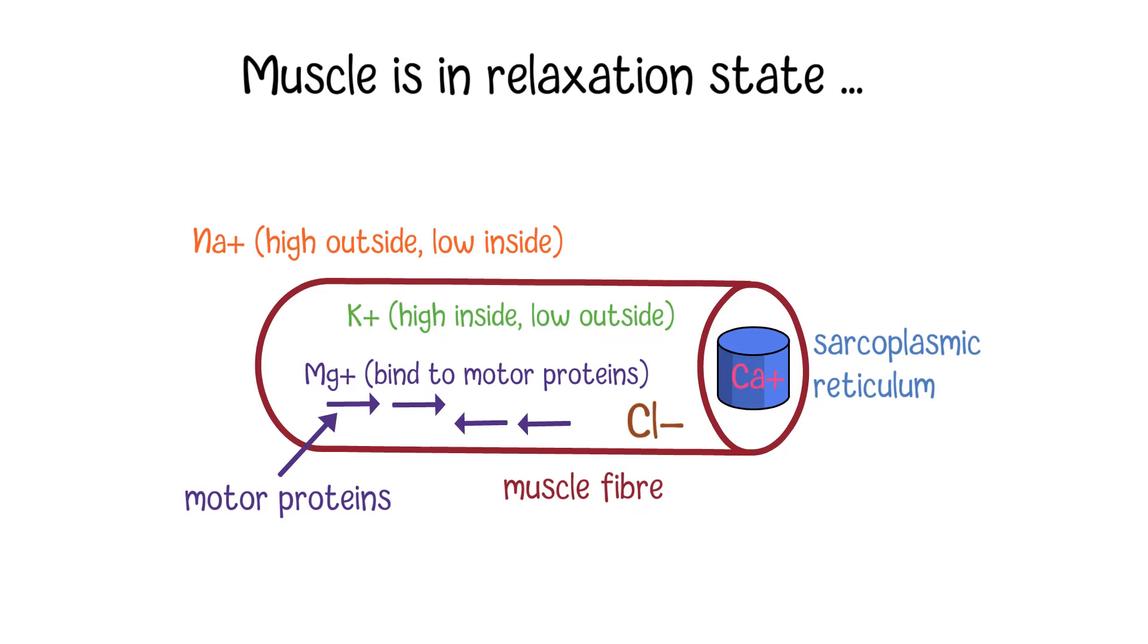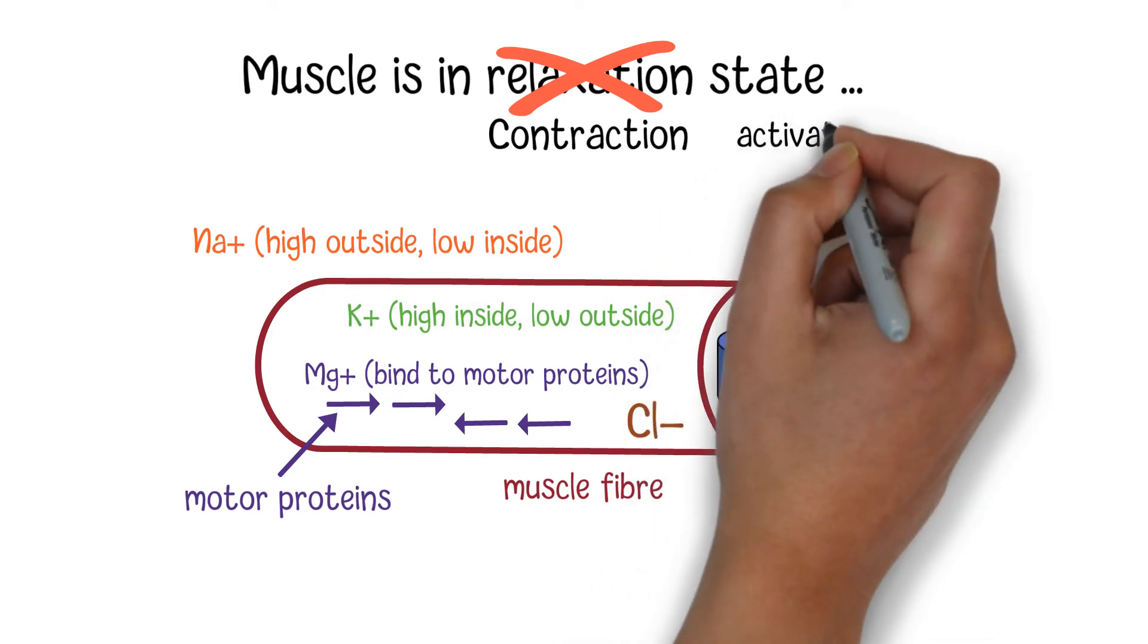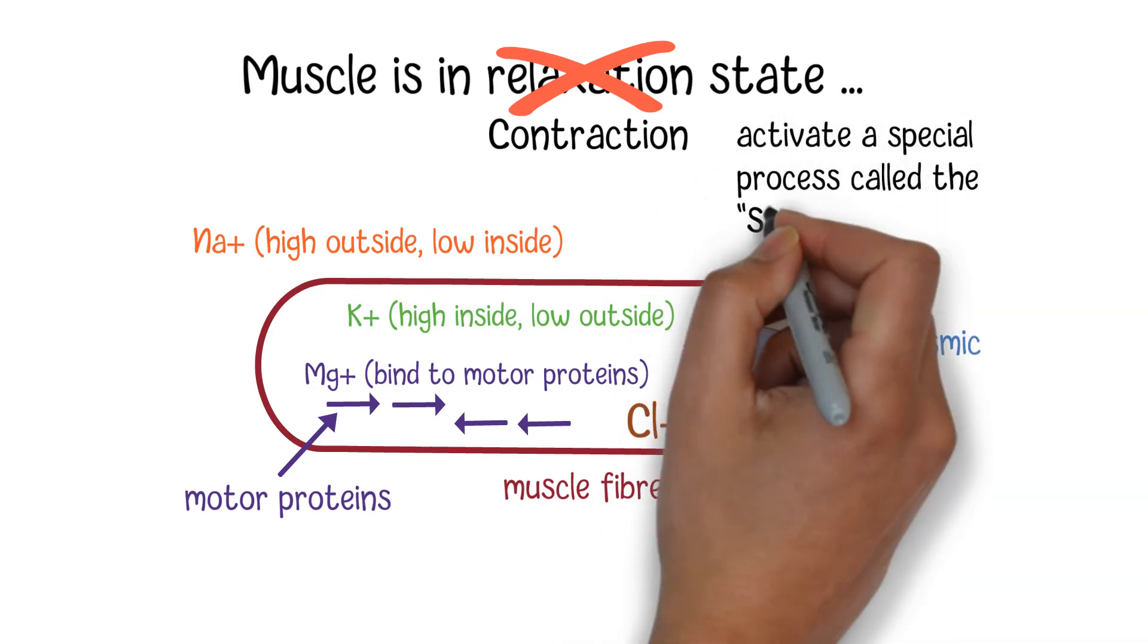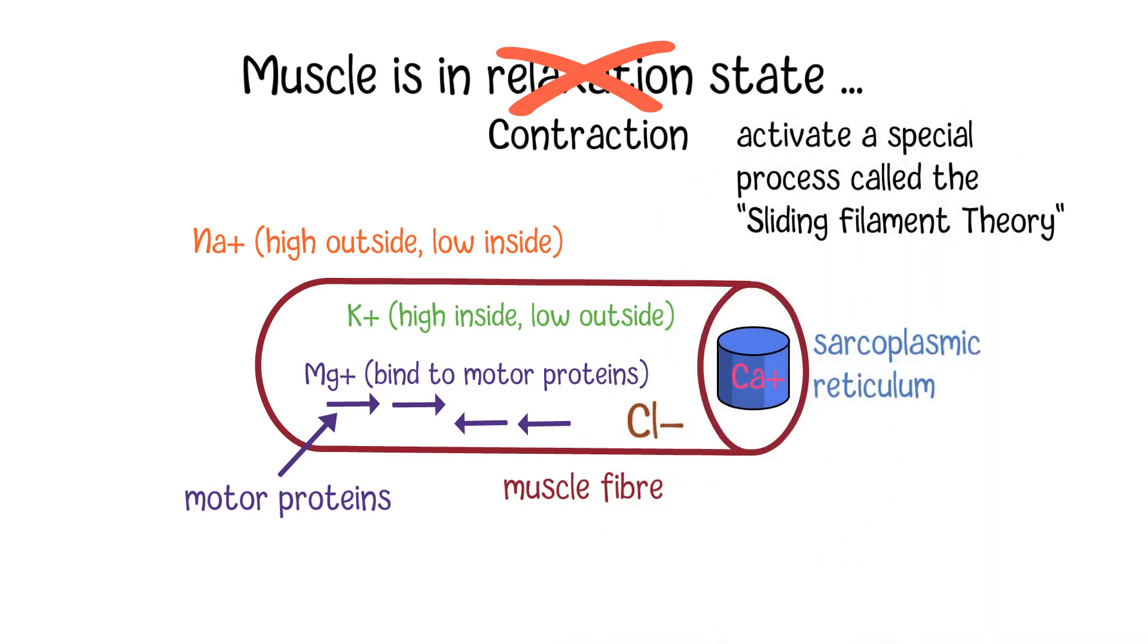When nerves send a signal to muscle cells to contract, the flow of different electrolytes will work together to help the motor protein activate a special process called the sliding filament theory, which will make the motor proteins move along cytoskeletal filaments by a force driven by the hydrolysis of ATP, which causes muscle contraction.